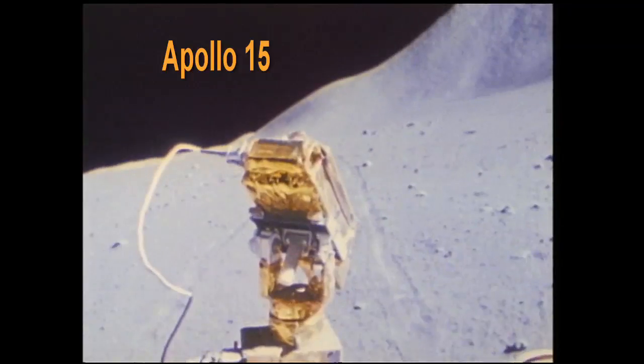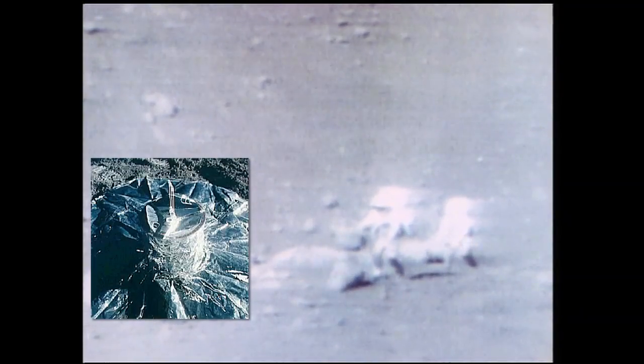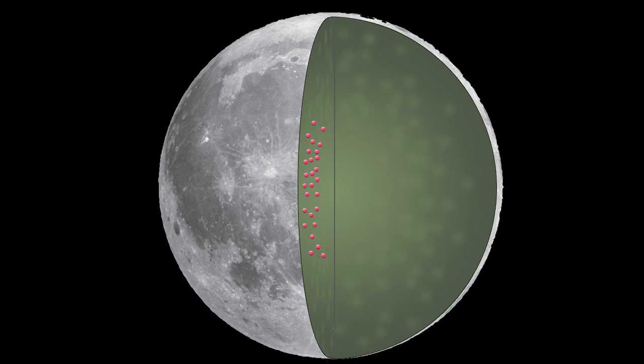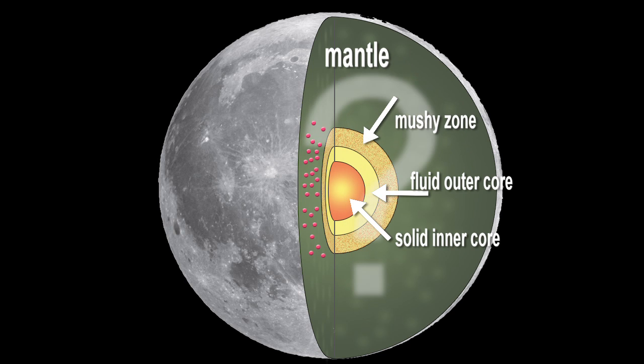The upper 60 percent is known pretty well because the Apollo astronauts placed seismometers on the moon, and for about half a dozen years we got records of moonquakes. As you go deeper, we don't know nearly as much about the size of the core, whether there's an inner core, how big it is. We think there's a mushy zone, but how mushy that zone is has yet to be determined.